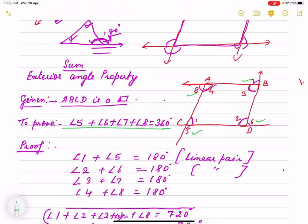I have taken here angle 1 plus 5 as it is a line. So both are linear pair. So total is 180 degree. Angle 2 plus 6 again a straight line, so it is total 180. Angle 3 plus 7, 180 degree. And angle 4 plus 8 also 180 degree.